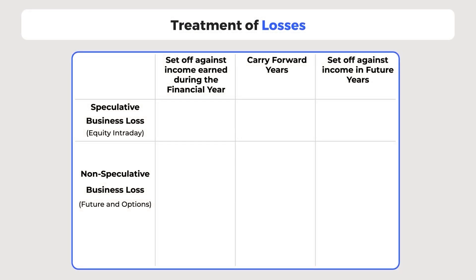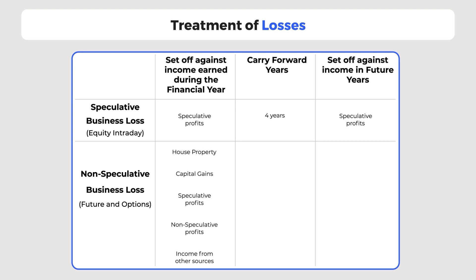Now let's understand the treatment of losses from trading activity. You can set off speculative loss, like from equity intraday trading, against other speculative business profit, and carry forward the remaining speculative business loss to the next 4 financial years, which can only be set off against future speculative business income. You can set off non-speculative business loss, like from futures and options trading, against any other income except salary, and carry forward the remaining loss to the next 8 financial years, which can be set off against both speculative and non-speculative business income. To carry forward losses, you need to report them while filing your income tax return. You cannot carry forward losses if you miss the due date and file a belated return.